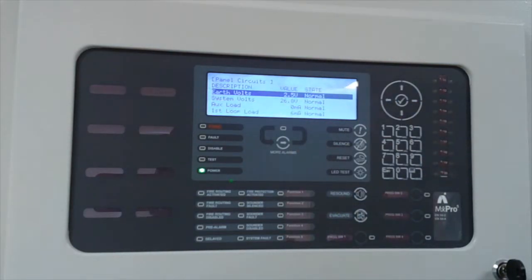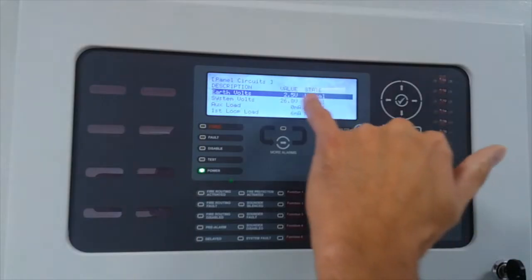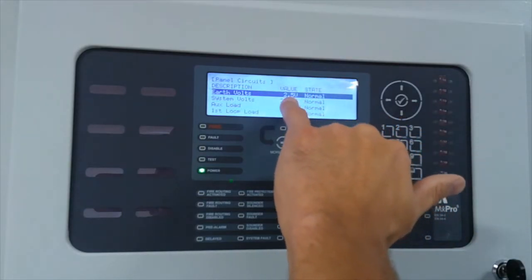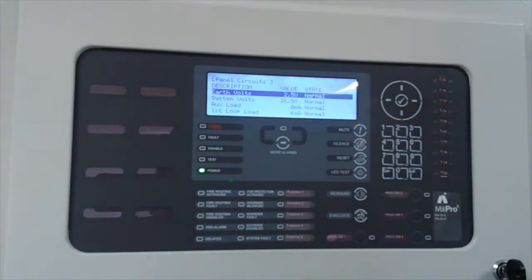If that earth voltage goes greater than three and a half or say four volts, that's a positive conductor to ground. If this voltage drops less than one and a half volts, then it's a negative conductor to ground.